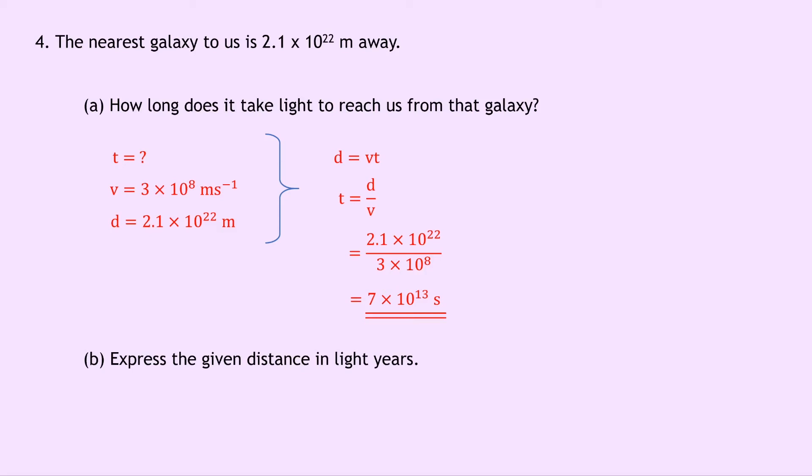Part B then says to express the given distance in light years. So if we want to convert from metres into light years, remember we're going to divide by how many metres are in one light year this time rather than multiply because we want a smaller number. So doing our division we have 2.1 times 10 to the 22 divided by 9.46 times 10 to the 15. Remember that is how many metres are in one light year. This gives you an answer of 2.2 times 10 to the 6 light years if you put it in your calculator.